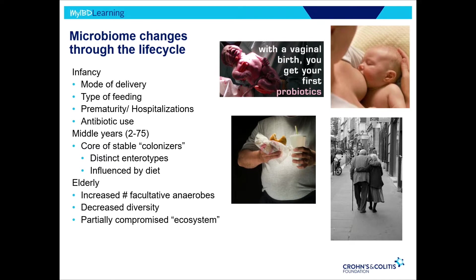This is a very dynamic process over the first two to three years of life, but around age two to three you start to develop more of your core, stable colonizers. They do fluctuate — courses of antibiotics and diet can change them — but that stays stable for the large majority of our life cycle. As we get older and people become more frail, we start to see decreased diversity of the microbes, different numbers of microbes that may be more pathogenic, and that ecosystem becomes compromised.